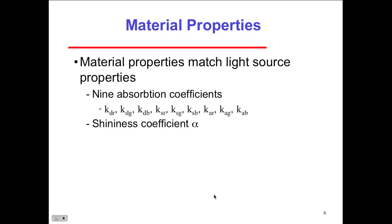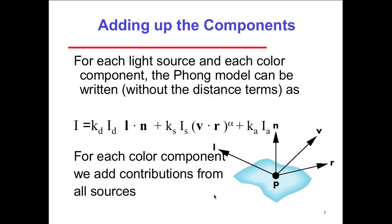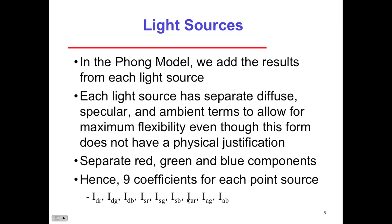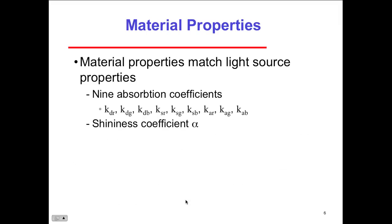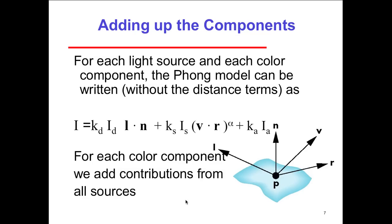Material properties match the light source properties — nine absorption coefficients and shininess coefficients — which are parameters sent to the function to achieve the particular effect. When you start looking at examples, you can set one coefficient lower than another, switch the light from left to right of the object, or make it more reflective or diffused. For each light source and color component, the Phong model can be written without the distance terms, with contributions added for all different sources.